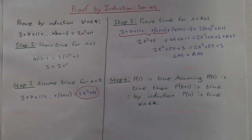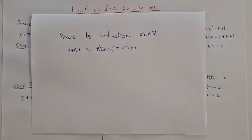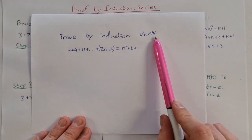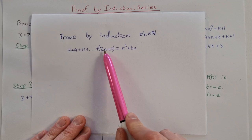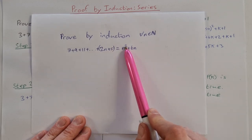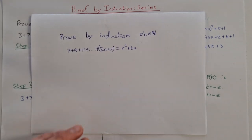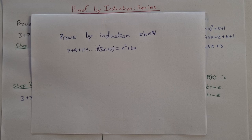So I have one for you to try here now. Prove by induction for all n element of N that 7 plus 9 plus 11 up to 2n plus 5 is equal to n squared plus 6n. Very similar to the one that we just did. I want you to give that a try now and let us know how you get on in the comments.